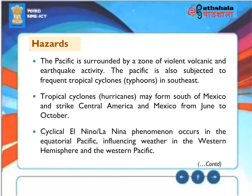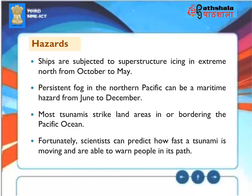Hazards: The Pacific is surrounded by a zone of violent volcanic and earthquake activity, and is also subjected to frequent tropical cyclones or typhoons in the southeast. Tropical cyclones or hurricanes may form south of Mexico and strike Central America from June to October. The cyclical El Niño or La Niña phenomenon occurs in the equatorial Pacific, influencing weather in the western hemisphere and the western Pacific. Ships are subjected to superstructure icing in the extreme north from October to May, and persistent fog in the northern Pacific can be a maritime hazard from June to December. Most tsunamis strike land areas bordering the Pacific Ocean, though scientists can predict tsunami movement speed and warn people in their path.